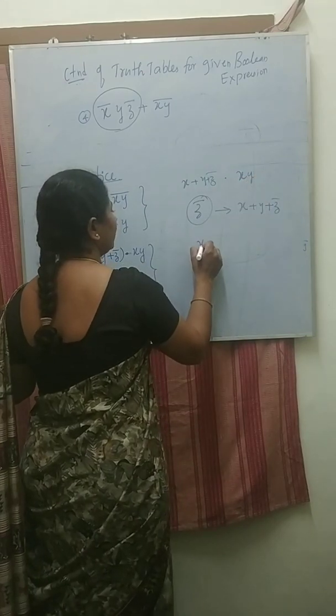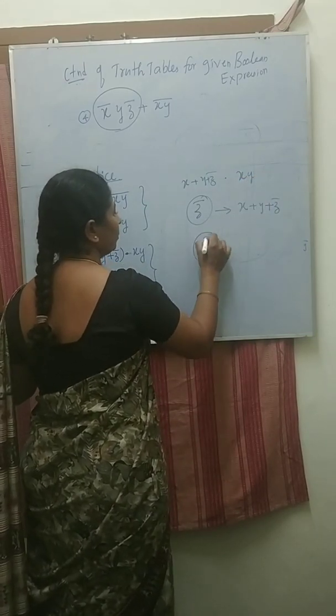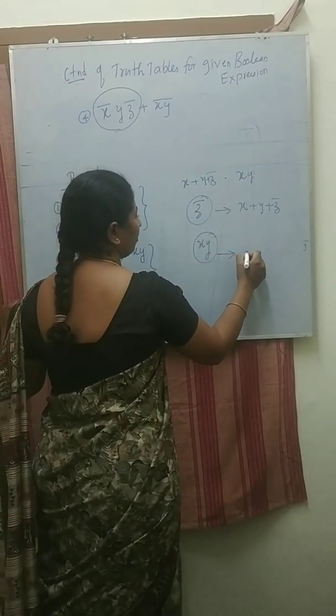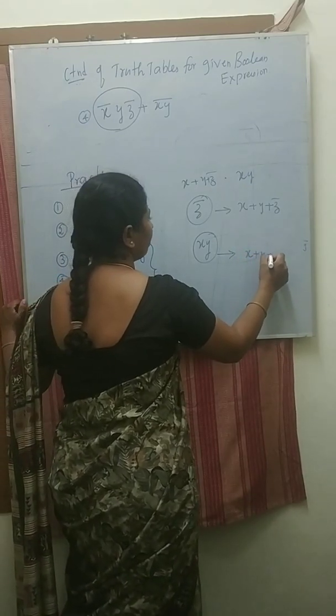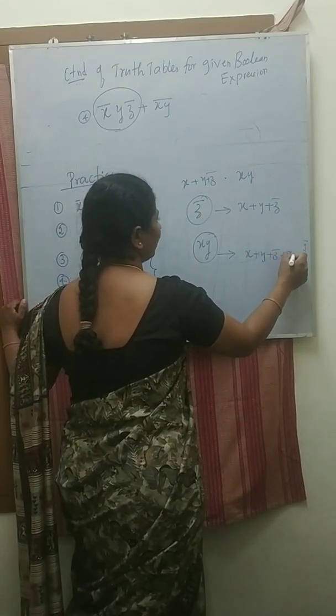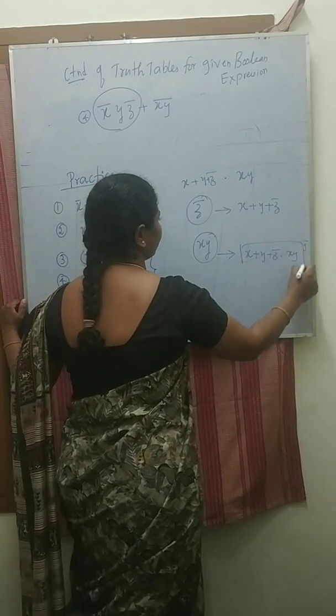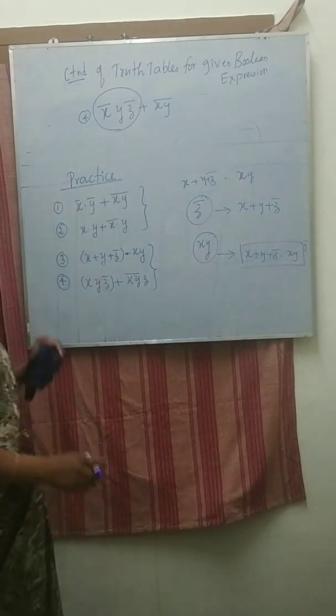Then continuation is there. XY: first find the XY. The result, whatever you will get, multiply with XY plus Z bar into XY. Do it.